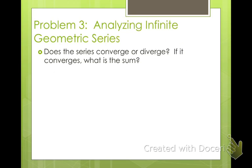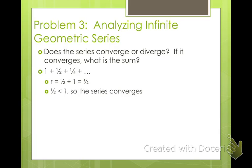Does the series 1 plus 1 half plus 1 fourth plus... converge or diverge? If it converges, what is the sum? To find whether it converges or diverges, we find r. You take term 2 divided by term 1: 1 half divided by 1 equals 1 half. Since 1 half is less than 1, the series is going to converge. The summation is 1 divided by 1 minus 1 half. Since 1 minus 1 half is 1 half, and 1 divided by 1 half is 2, the sum is 2.